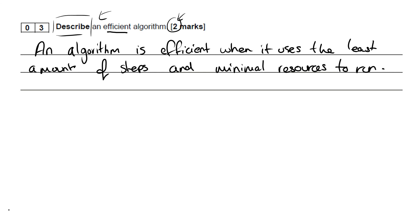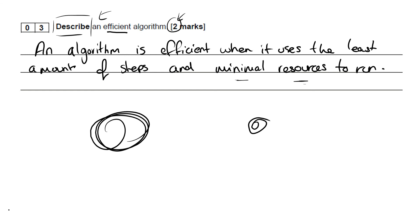Just thinking about those two algorithms we looked at previously — they both had exactly the same number of lines of code, but when actually running, thinking about the resources and lines of code that actually execute, the second algorithm used the least resources because it only needed to iterate three times where the other iterated five times. So an algorithm is efficient when it uses the least amount of steps and minimal resources to run.